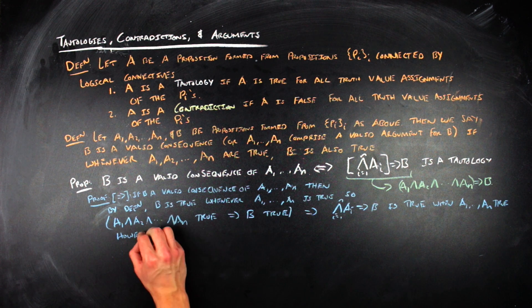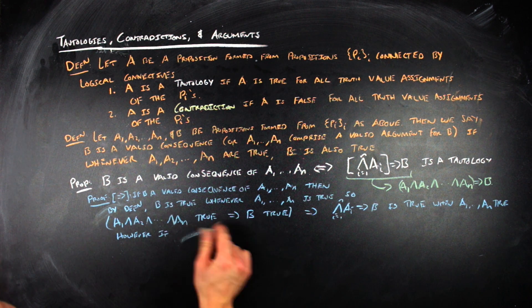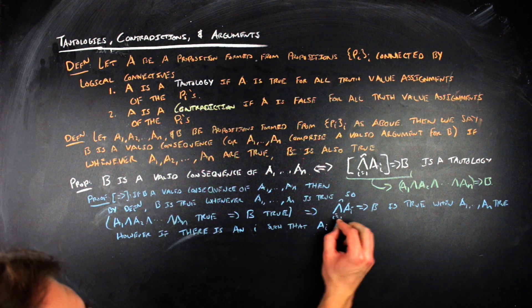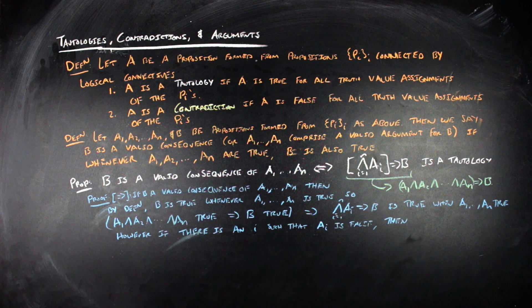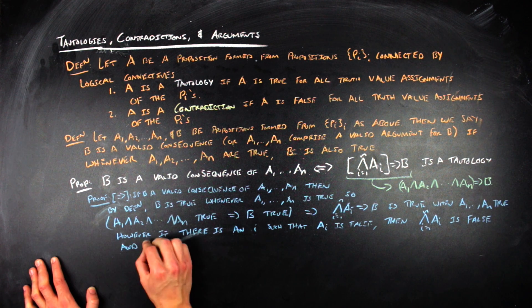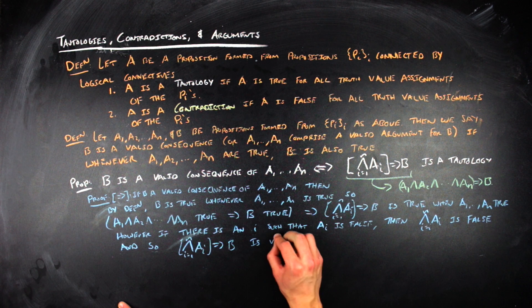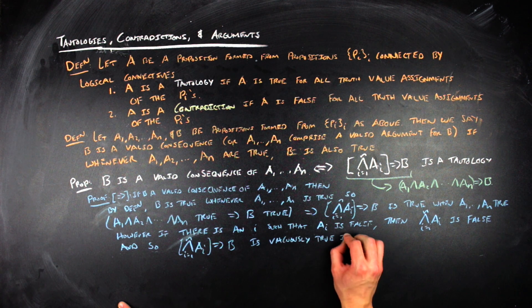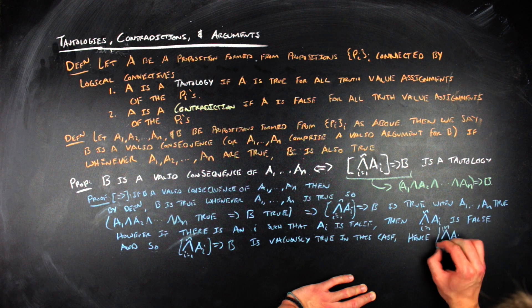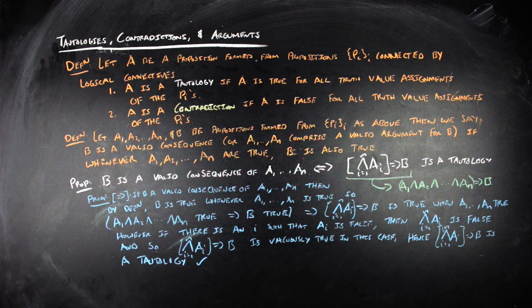And then the other thing to look at is, well, what if one of the A's is false? And so if one of the A's is false, then the ANDed statement by definition of what it means to AND together two propositions would be false. And so in that conditional, we would have an example of vacuous truth. So in all cases, the ANDed together A's conditional or implying B is a tautological symbolic statement. And therefore, the first direction is proved.